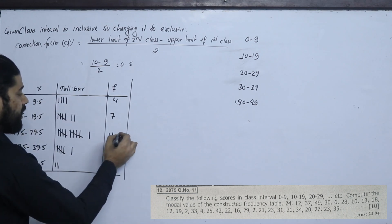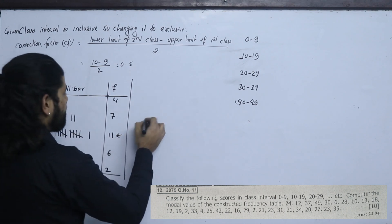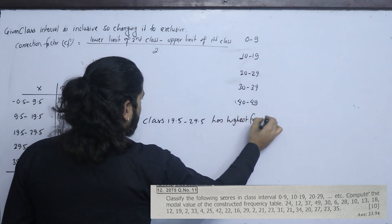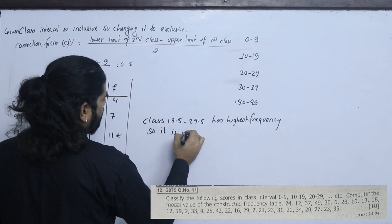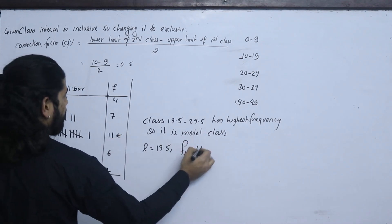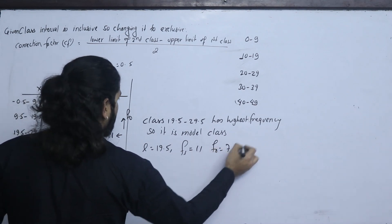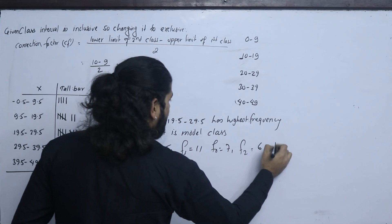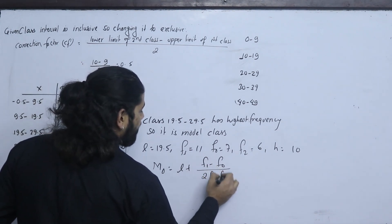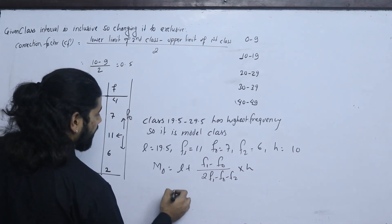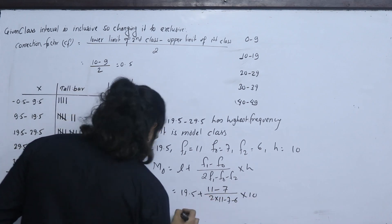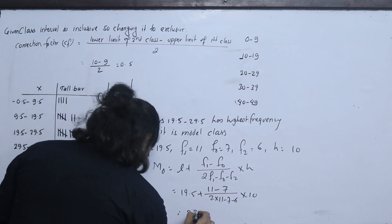The highest frequency is in the class 19.5 to 29.5, so it is the modal class. With l equal to 19.5, f1 equal to 11, f0 equal to 7, f2 equal to 6, and h equal to 10, the mode equals 19.5 plus 11 minus 7 upon 2 into 11 minus 7 minus 6, into 10. This gives mode equal to 23.94.